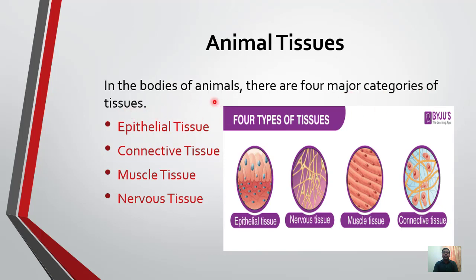Animal ki body mein four major types hain, ya categories hain, tissues ki. First of all epithelial tissues, connective tissue, muscle tissue and nervous tissue. In ko hum diagram ki madad se bhi dekh sakte hain: epithelial tissue, nervous tissue, muscle tissue and then connective tissue.